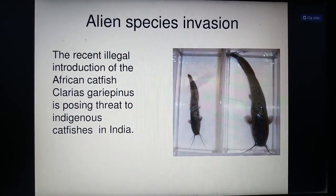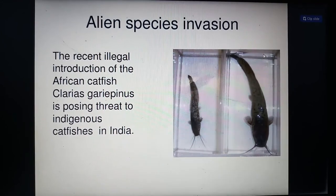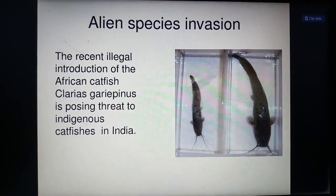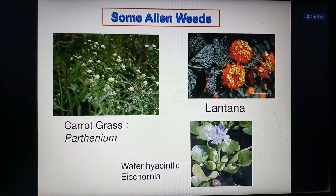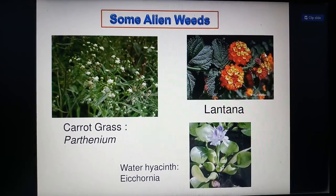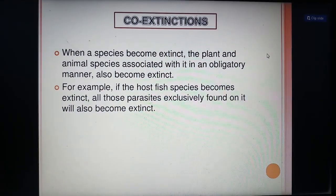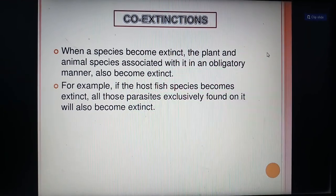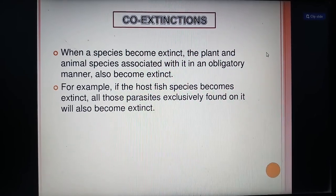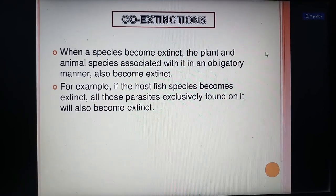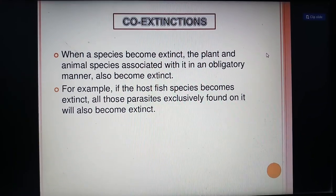The illegal introduction of African catfish (Clarias) poses a threat to indigenous catfishes of India. Alien weeds such as carrot grass, lantana, and water hyacinth in West Bengal are also problematic due to alien species invasion. Co-extinctions: when a species becomes extinct, the plant and animal species associated with it in an obligatory manner also become extinct. For example, if host fishes become extinct, all those parasites exclusively associated with them will also become extinct.